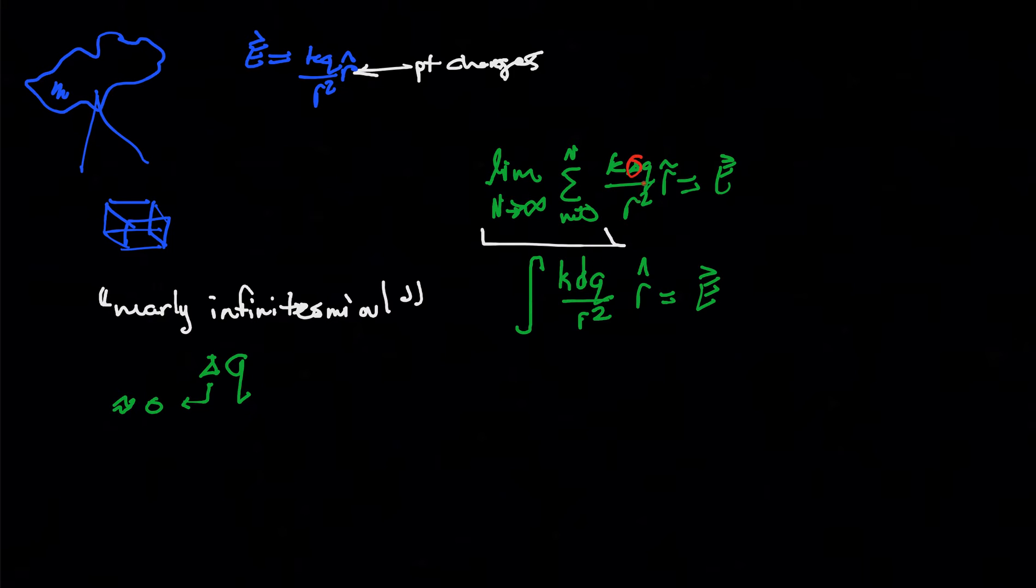We just write this as the integral k dq over r squared r hat equals E. The important part about this change that I'm just going to point out is that I changed from this delta to this d, because delta and the sum are Greek letters, but the integral sign is not a Greek letter. So we can't have Greek letters in this arrangement of our equation, but we can have them here. So we're just going to denote this delta as d.